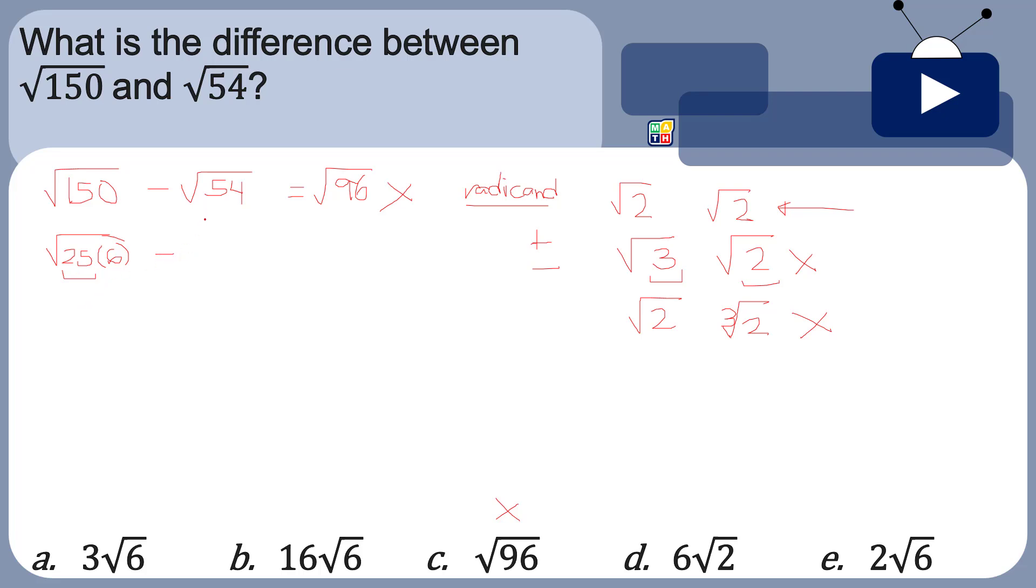Now your 54 can be 9 times 6. 9 times 6 is 54 and 9 is a perfect square. After this, after we were able to factor them, this time we can take this out as well.